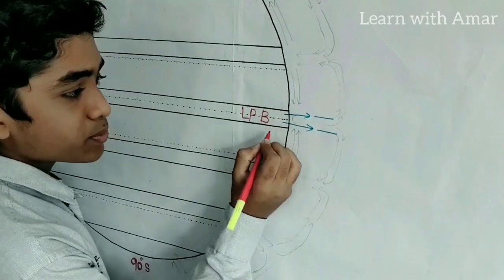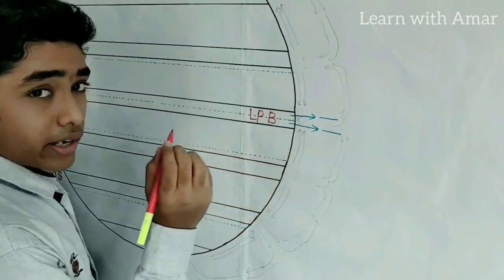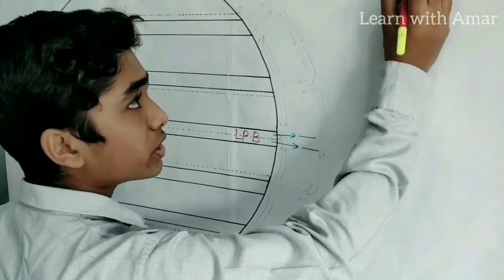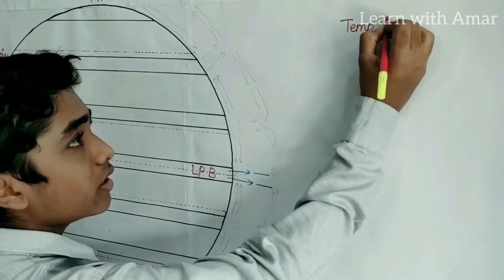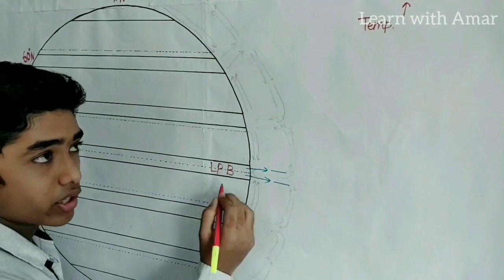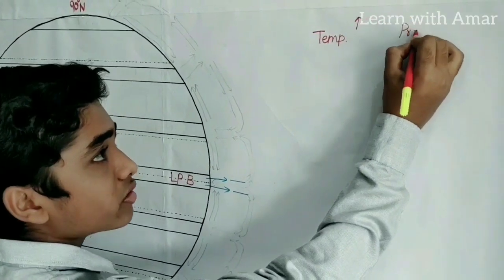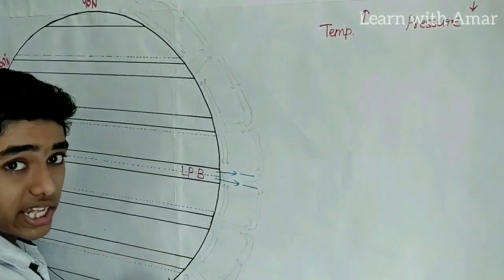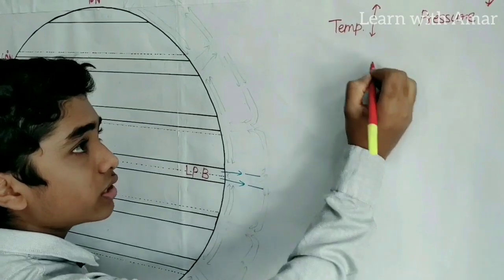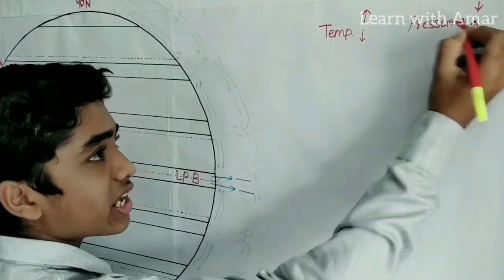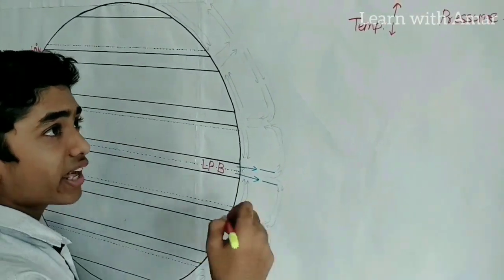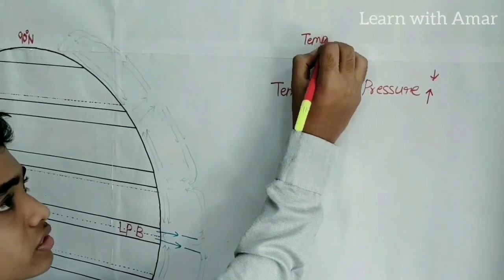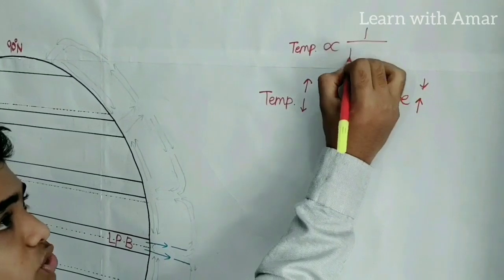As low pressure is present here, let us look at the relationship between temperature and pressure. Here in the equatorial zone, temperature is high, so pressure is low. In the same way, in other places, if the temperature is low, then we find that the pressure is high. So mathematically, we can write it as: temperature is inversely proportional to pressure.